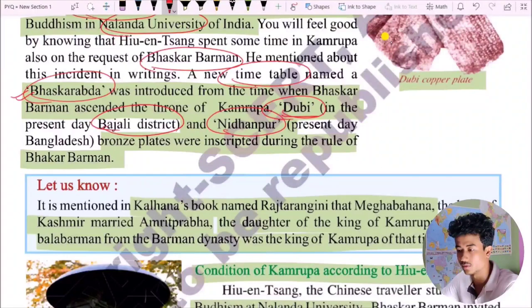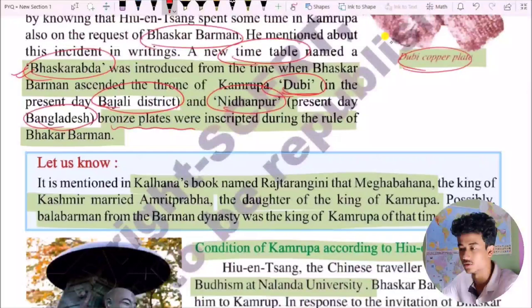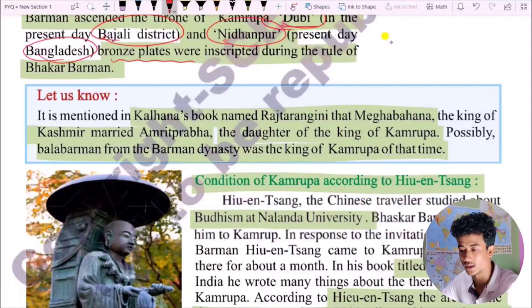This is called the copper plates — the inscriptions of Bhaskar Varman as seen in historical records. These copper plate inscriptions were made during the rule of Bhaskar Varman. It is also mentioned in Kalhana's book named Rajatarangini.